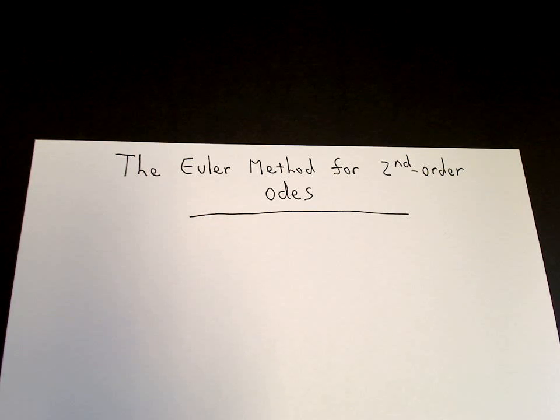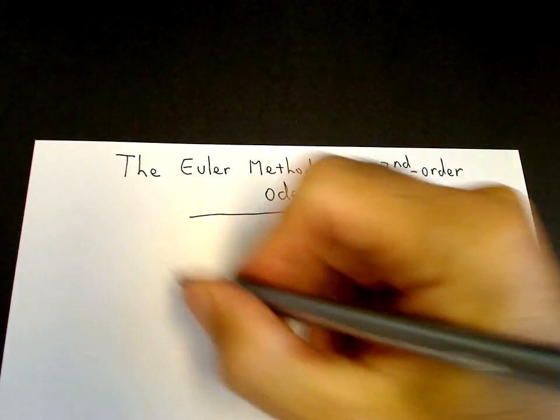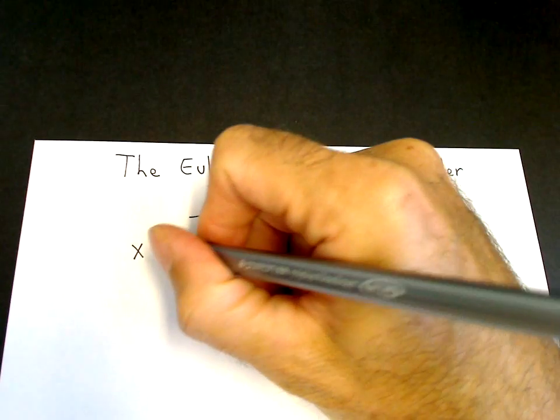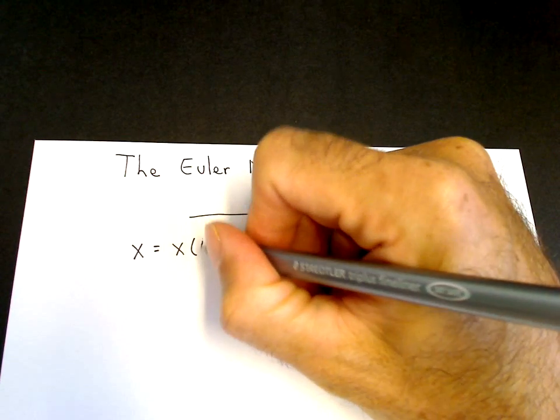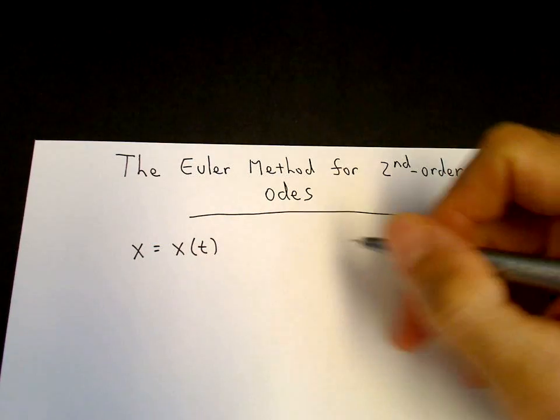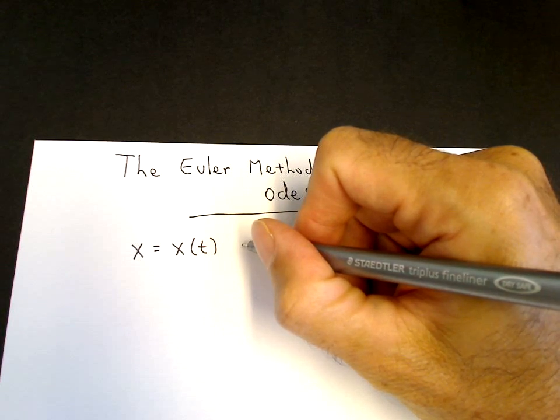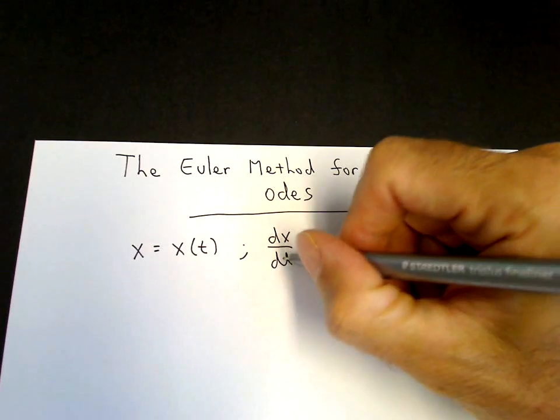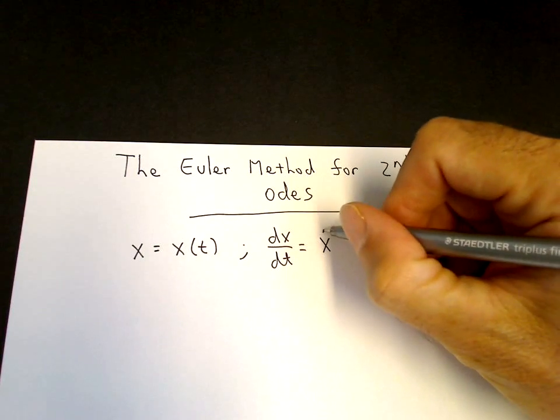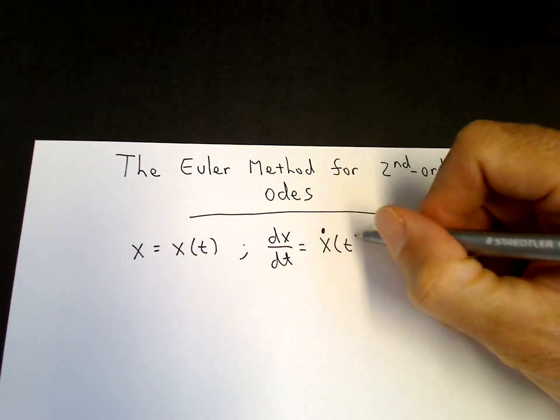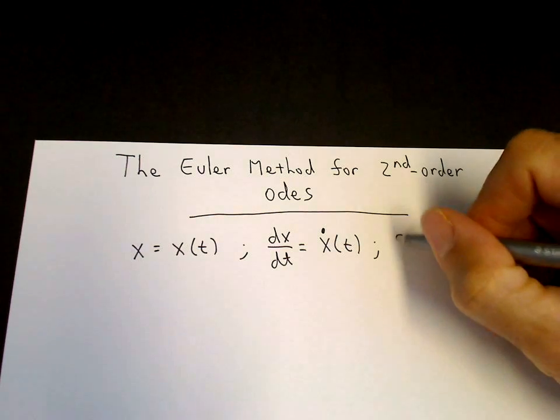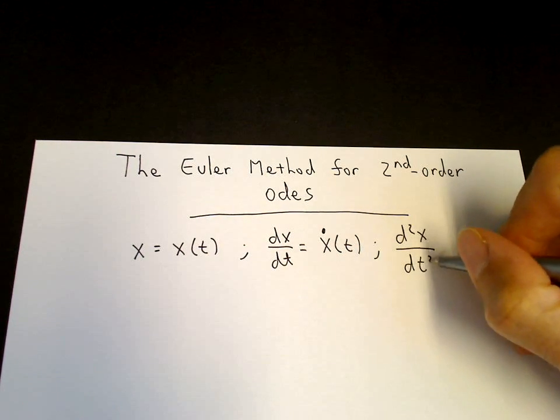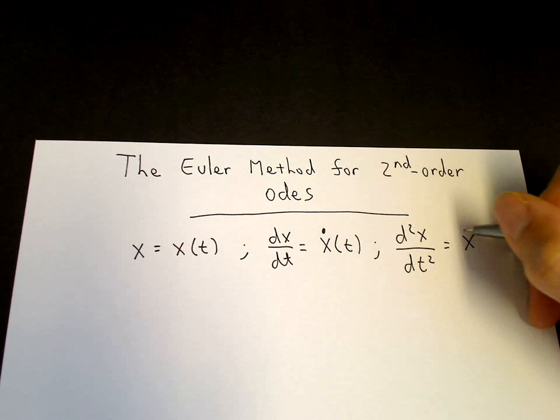The notation I'm going to be using is we're going to have x which is going to be a function of time. So then I'll call the derivative dx/dt, I'll call that x dot using a physics notation, and the second derivative of x with respect to time I'll call x double dot.